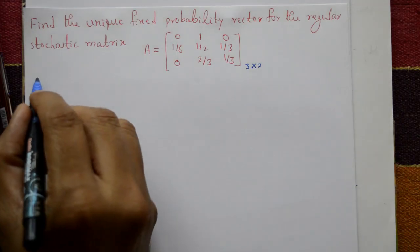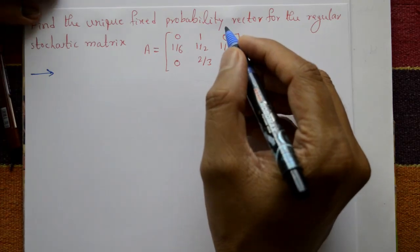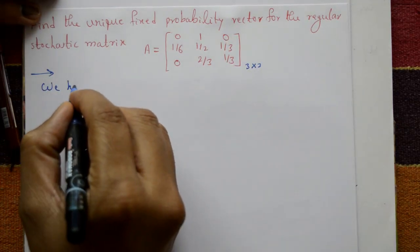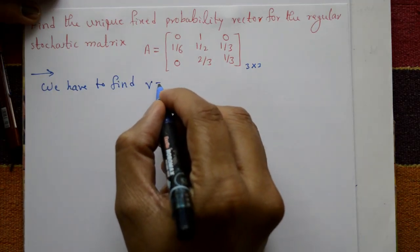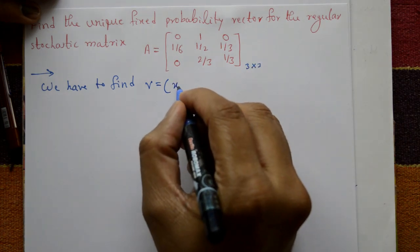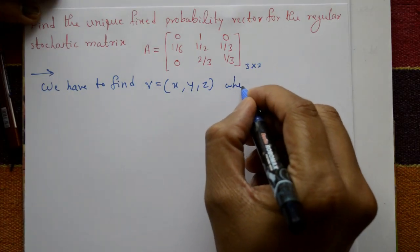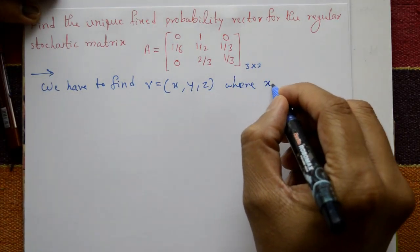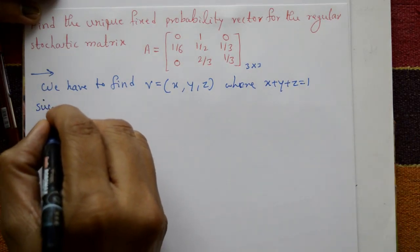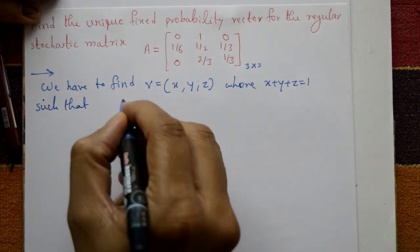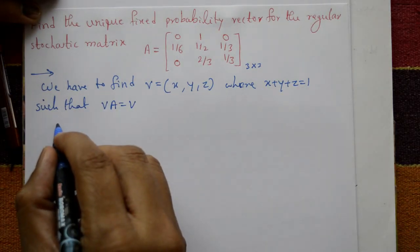To find the unique fixed probability vector, let v = [x, y, z] where x, y, z are three variables. The condition is that x plus y plus z is equal to 1, and such that φ·A = φ, where φ is the row matrix [x, y, z].